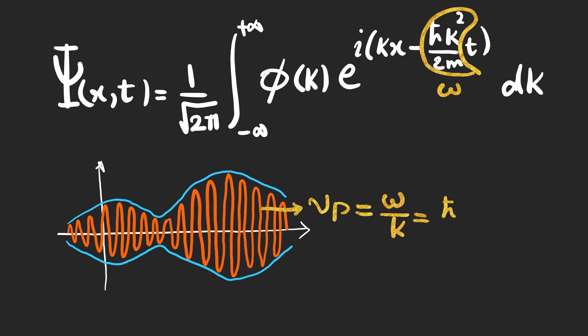What corresponds to the speed of the particle is not the speed of these small waves, which is the phase velocity, but the speed of the envelope called the group velocity, which can be equal, smaller, or greater than the phase velocity.